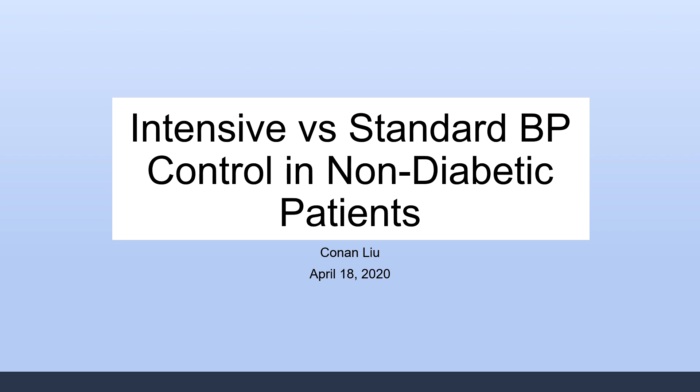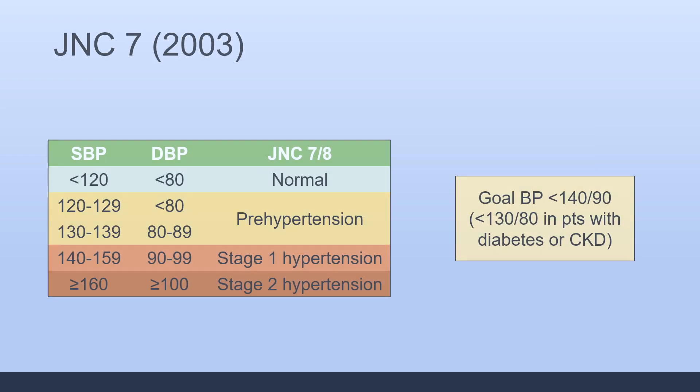I will mainly be looking at the landmark 2015 SPRINT trial. But first, a background. In 2003, we got the JNC-7 guidelines, which provided criteria for diagnosing hypertension, as well as a recommendation to treat blood pressure to less than 140 over 90, or less than 130 over 80 in patients with diabetes or CKD. These recommendations were based off of some seminal studies done in the 70s and 80s.